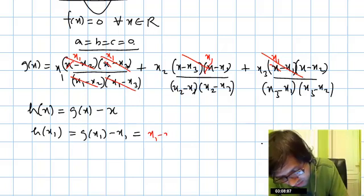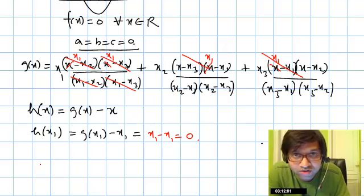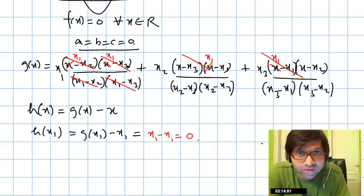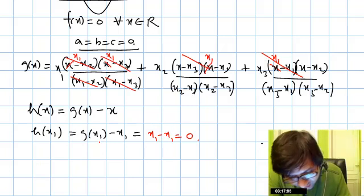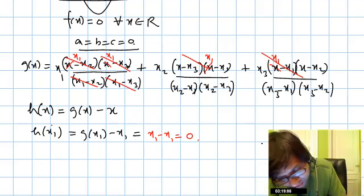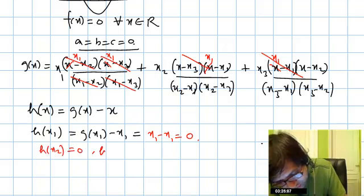x₁ - x₁ is 0. Now h(x₁) is a function which is again a quadratic polynomial which is 0 for x = x₁. Now similarly, by symmetry, you can check that h(x₂) will also be 0 and h(x₃) will also be 0.